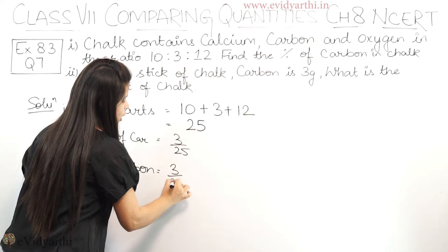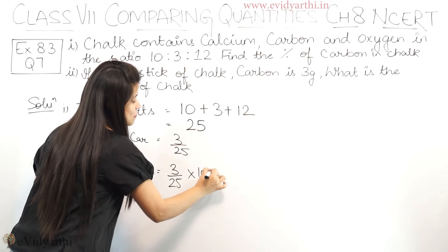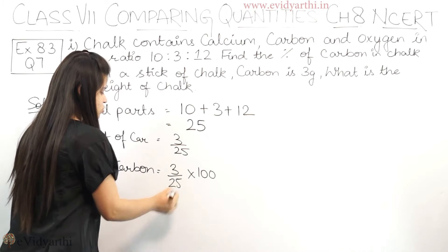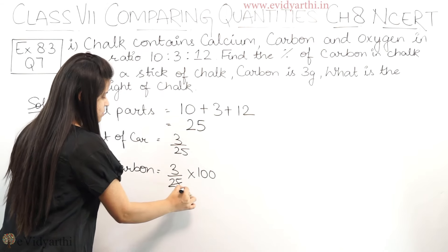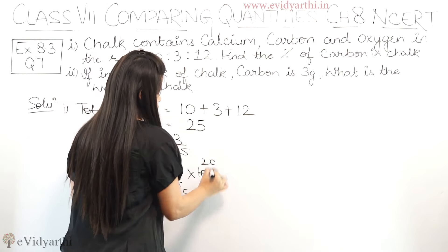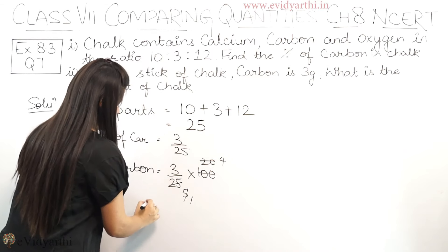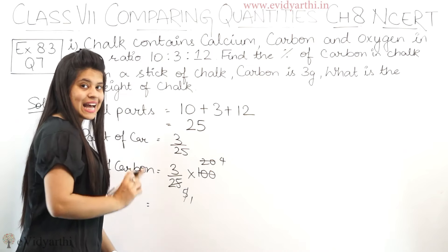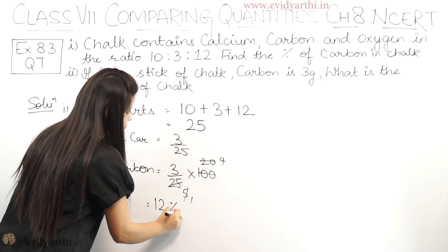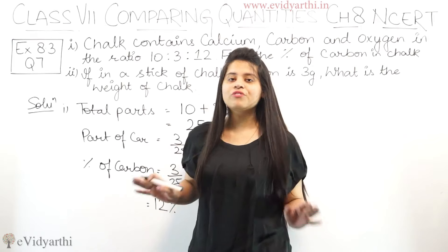To find the percentage, अगर आपके पास fraction में है, all you have to do is multiply by 100. So 3/25 × 100. Solving this: 100/25 = 4, and 4 × 3 = 12. So the percentage of carbon is 12%.